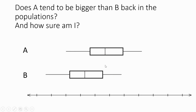This next example is just brought a little closer, but it's the same idea. You can see that the median for A is bigger than the upper quartile for B. So we can say that half of A is bigger than three quarters of B, which is enough for us to say that A tends to be bigger than B back in the population. Remember, if we have that jitter, the chances are that would still be bigger than that one over there.